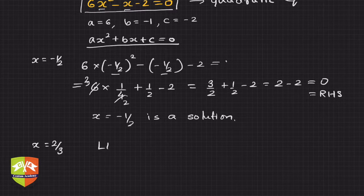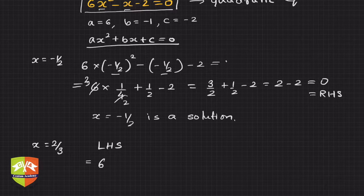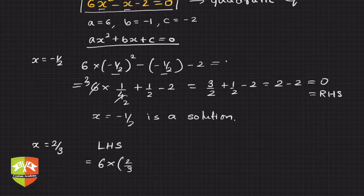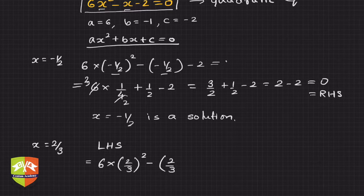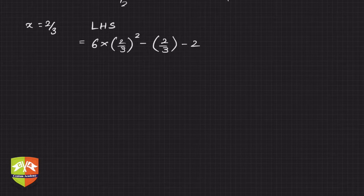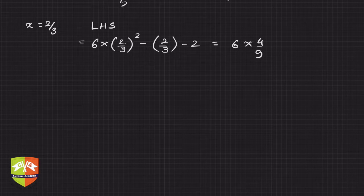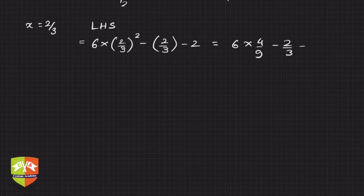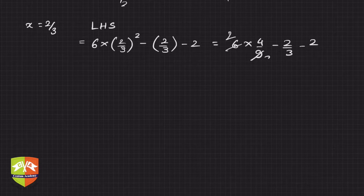For x = 2/3, let's check LHS—left-hand side. 6 × (2/3)² - 2/3 - 2, which equals 6 × 4/9 - 2/3 - 2. If I cancel 3, 3 twice, 3 thrice.